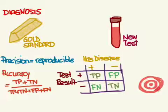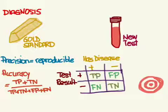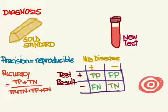We can visualize accuracy and precision using a target and a shooter. A shooter who is precise but not accurate will cluster all shots in the same area, but far from the center. A shooter who is accurate but not precise will get near the center but not always in the same spot. A shooter who is both precise and accurate will place shots in the same area every time, dead center. A shooter who is inaccurate and imprecise shoots all over the place, never in the same spot twice and never near the center.